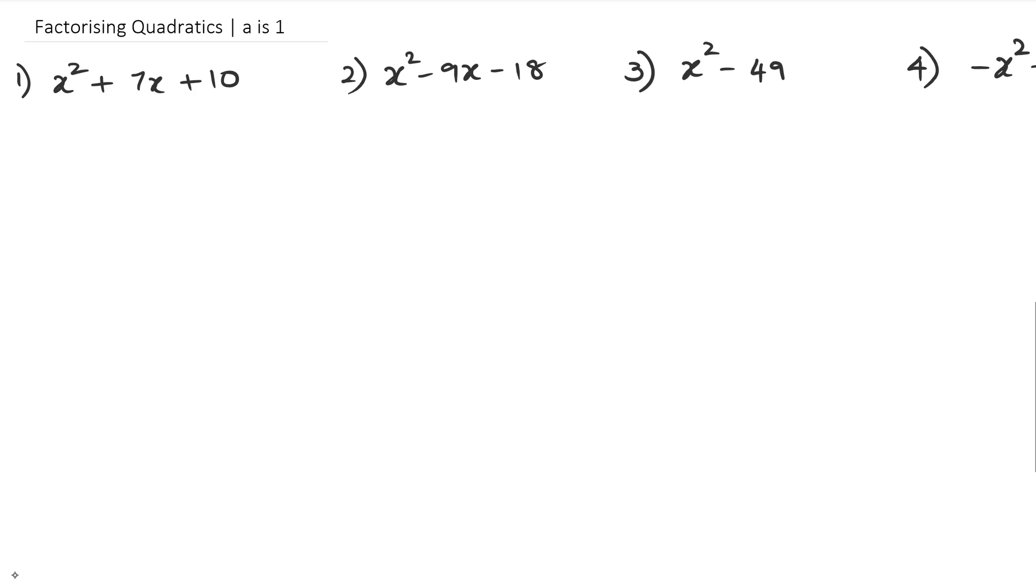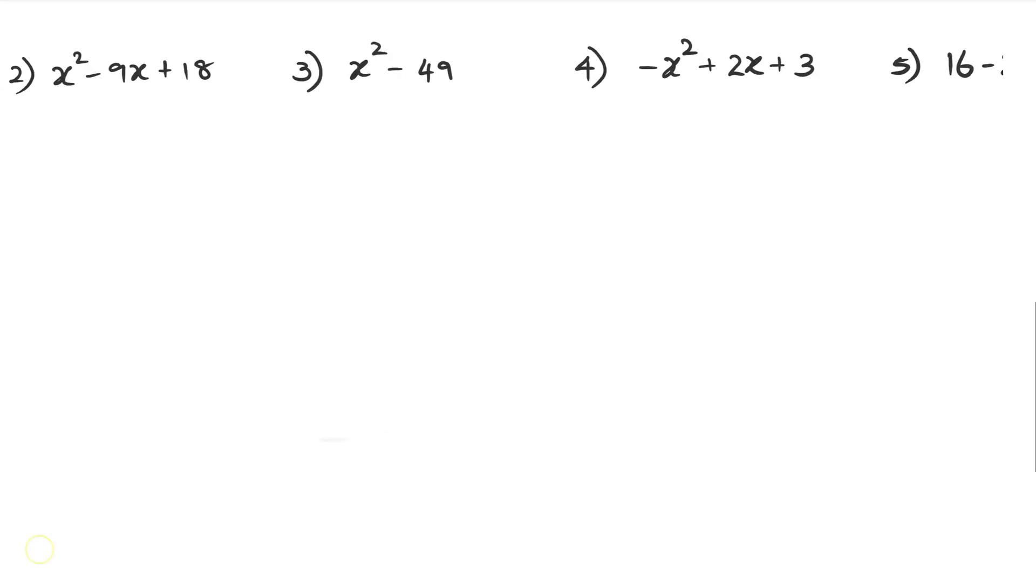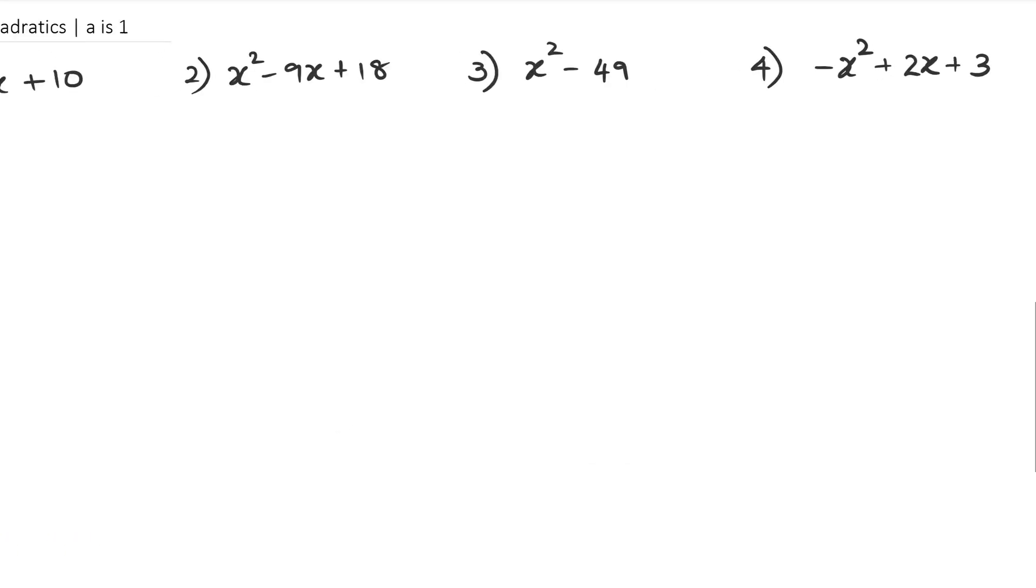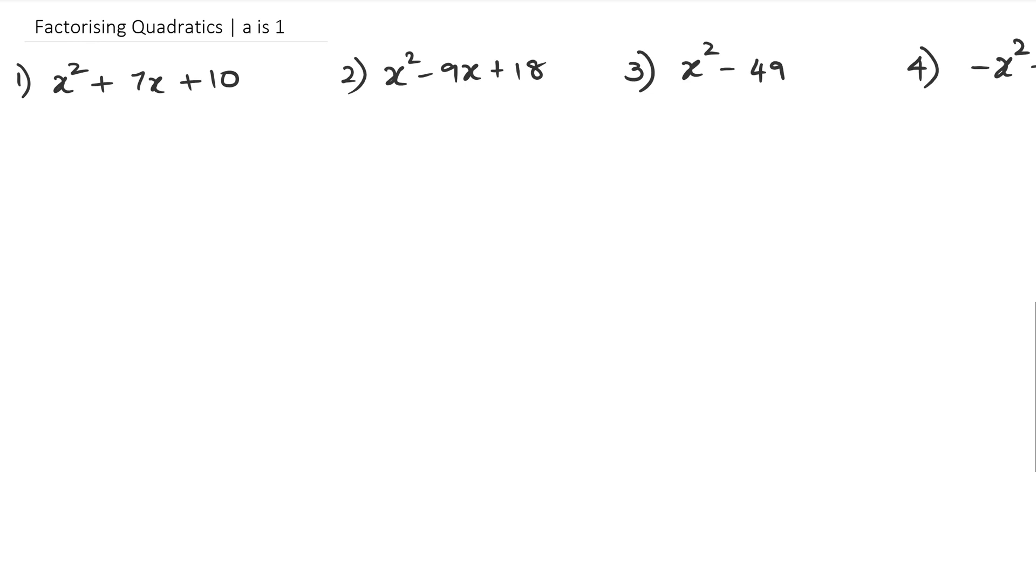These are the five questions we're going to be looking at, so let's get started. To recap, if you remember what you needed to do for factorizing quadratics, you always looked at what the final number was. In this case it's positive 10, so you're looking for two numbers that multiply to positive 10 and add up to 7.